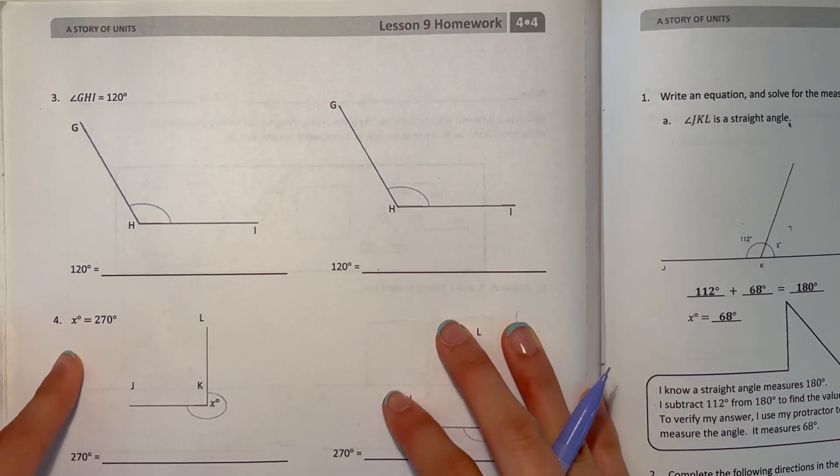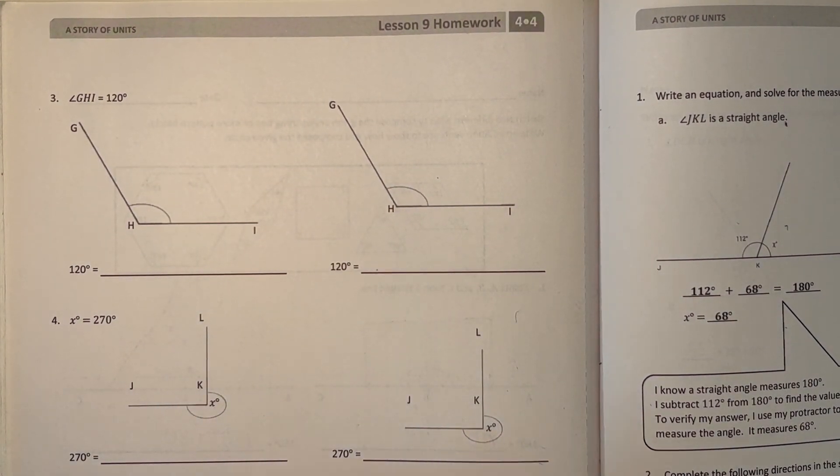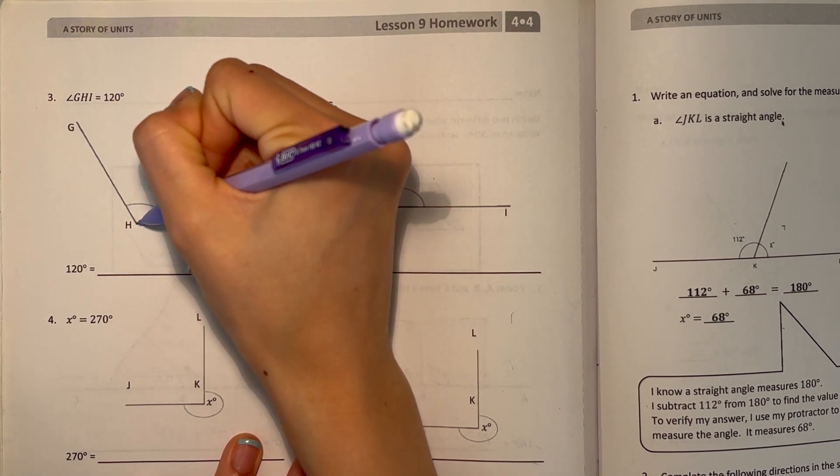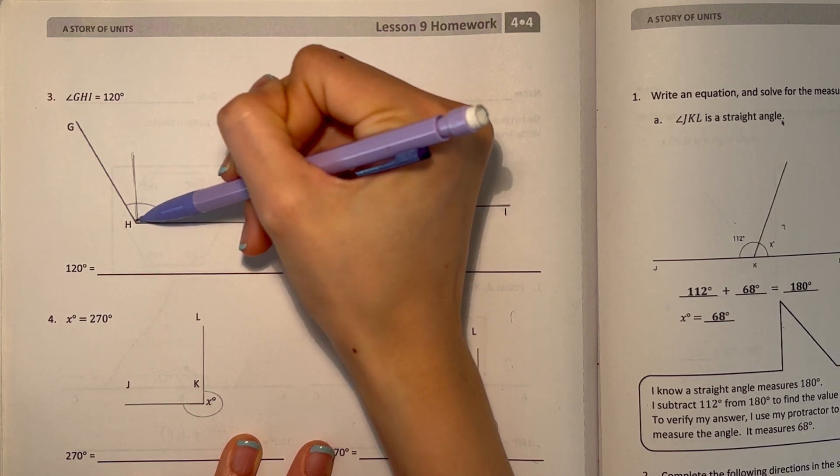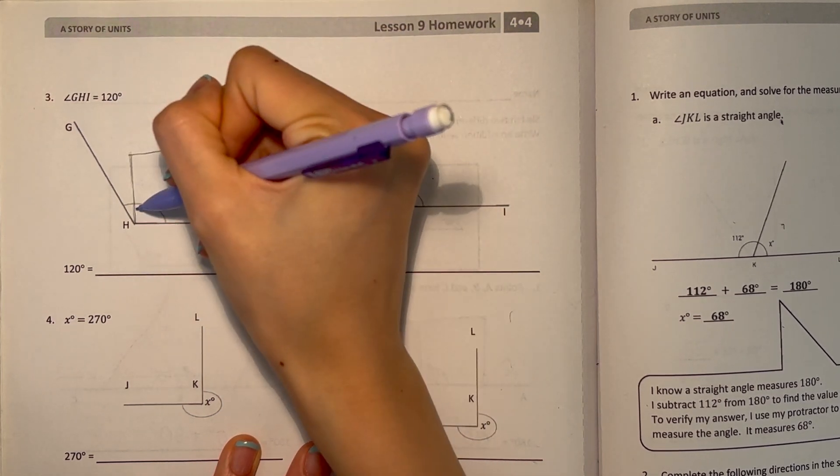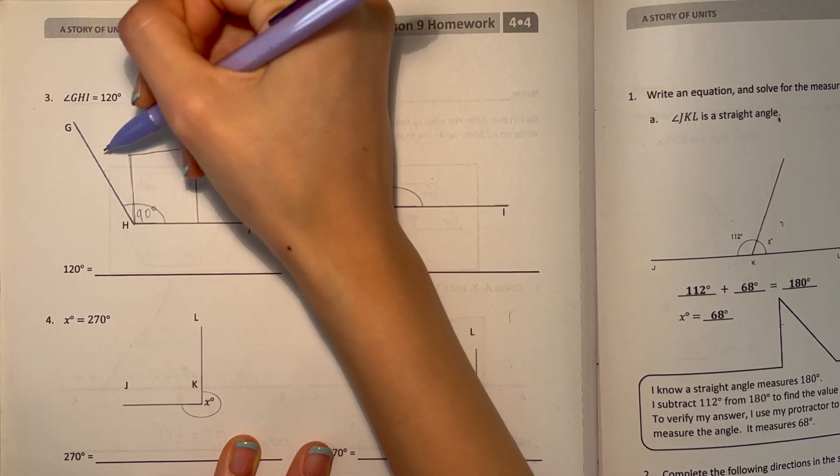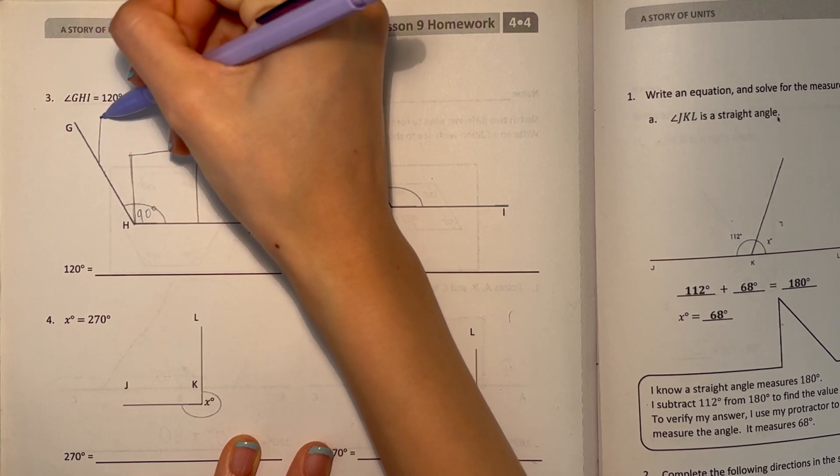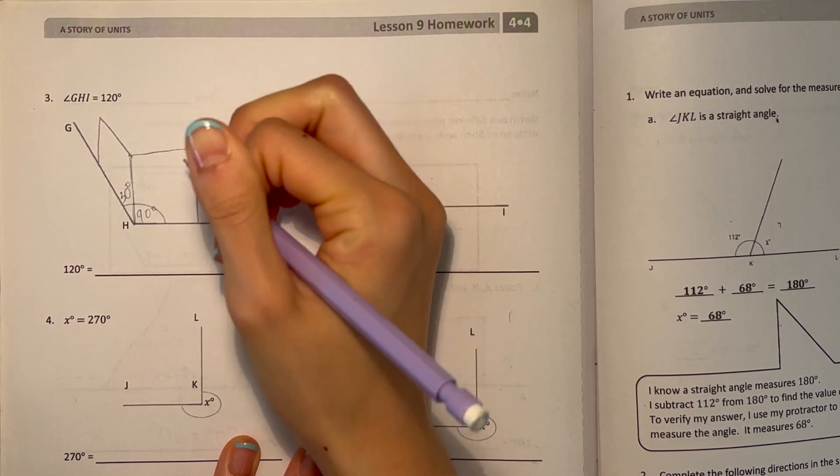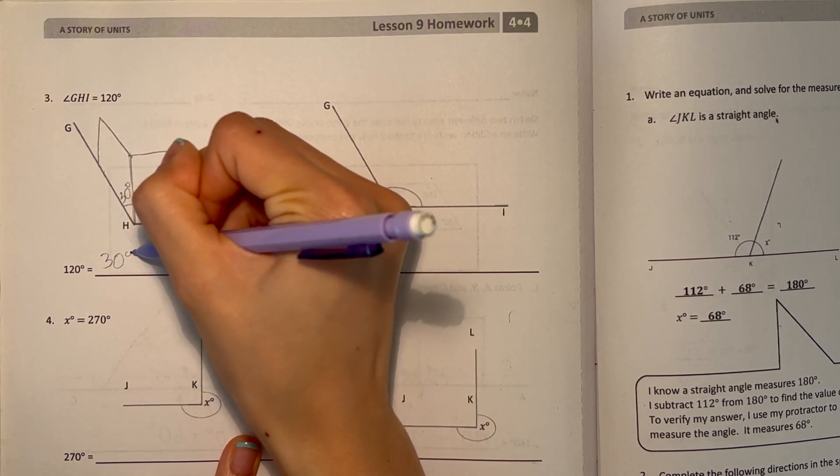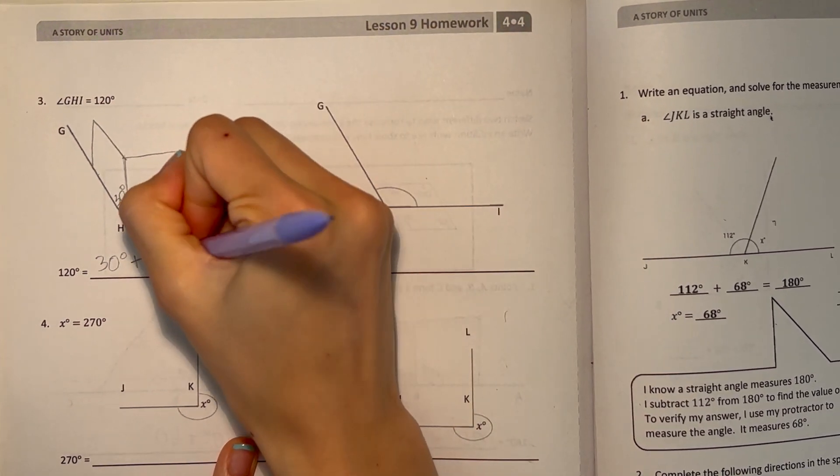Number three. GHI, 120 degrees. We can first put a square or something. And this would be 90 degrees because it makes a square. And the remaining part, we only need 30 degrees more. So we can draw the parallelogram. And this would be 30 degrees. That means 30 degrees plus 90 degrees equals 120.